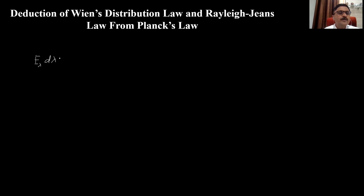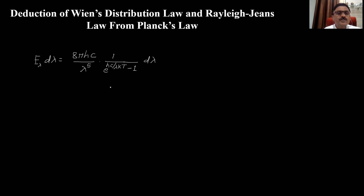Planck's radiation law is given by the equation: E_λ dλ = (8πhc / λ⁵) × (1 / (e^(hc/λkT) − 1)) × dλ. This is the expression for Planck's radiation law.